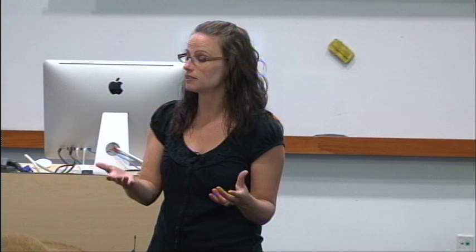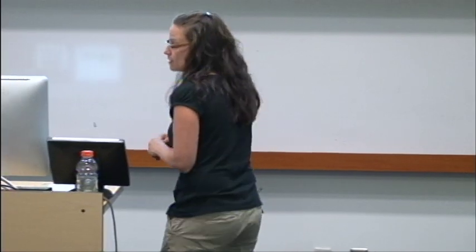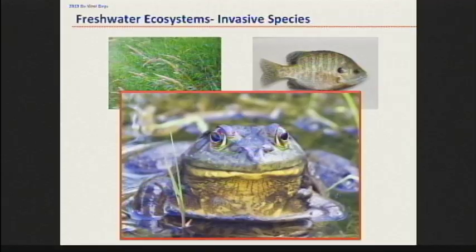A lot of our native species, including amphibians, have no recognition of these species, so they can really wipe out a lot of the native individuals in a pond. And then you've got this thing — I'll be spending a lot of time talking about the invasive bullfrog for the next 20 minutes.